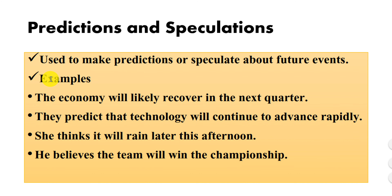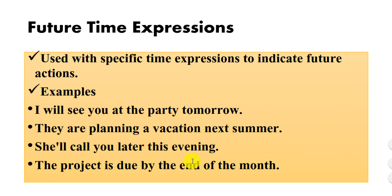Number three is predictions and speculations. The future tense is used to make predictions or speculate about future events. For example: the economy will likely recover in the next quarter; they predict the technology will continue to advance rapidly; she thinks it will rain later this afternoon; he believes the team will win the championship.